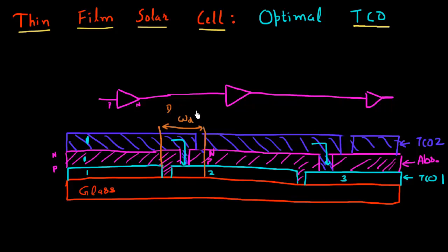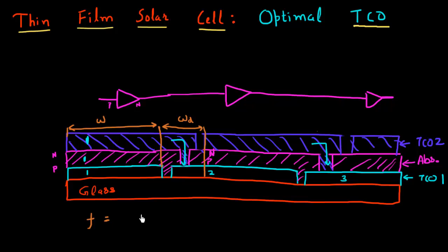So if you're a solar cell manufacturer, you essentially want to minimize the fraction of this dead region. So let's say this is my dead region and this is my actual cell — I want to minimize the fraction of the width of the dead region versus the width of my cell. I want to minimize this fraction, which is W_D divided by W.